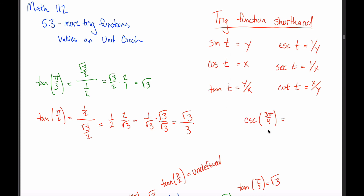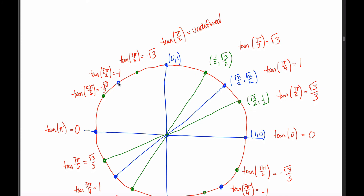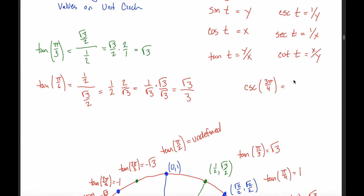For example, cosecant of 3π/4: that corresponds with sine. The point 3π/4 has y-coordinate √2/2, so cosecant of 3π/4 is 1/(√2/2) = 2/√2. Rationalizing the denominator by multiplying by √2/√2 gives 2√2/2. Canceling the 2s, the cosecant of 3π/4 equals the square root of 2.